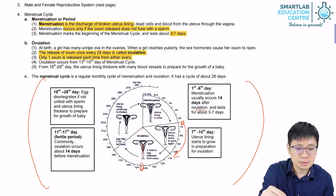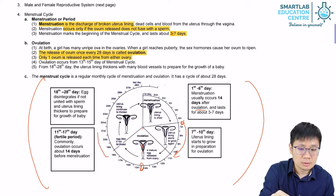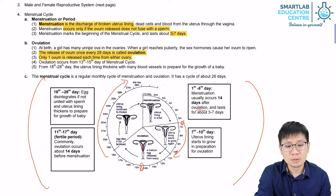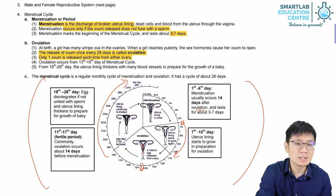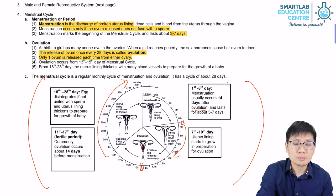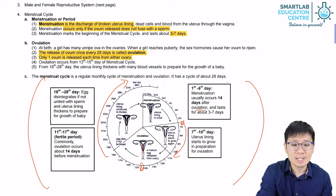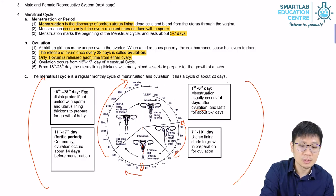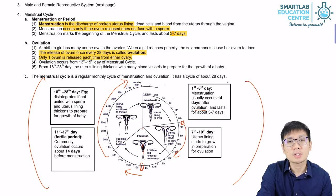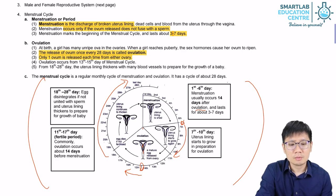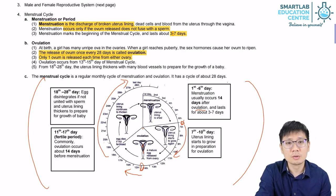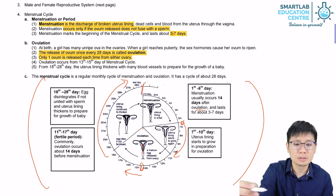After ovulation, the uterine lining will continue to thicken a bit and will stay thick until around day 28. If there was no fertilization, the uterine lining will break down by around day 28. The egg cell would have already died, as it can only last about two days at most — on average, one day. If the uterine lining breaks down, the cycle starts all over again and we consider that the beginning of a new cycle.